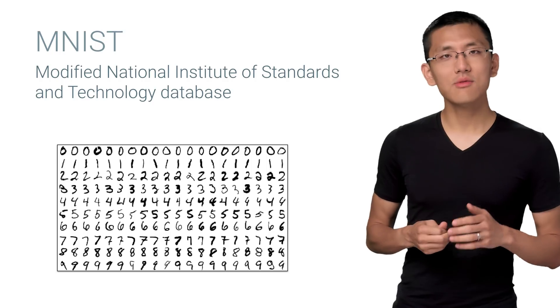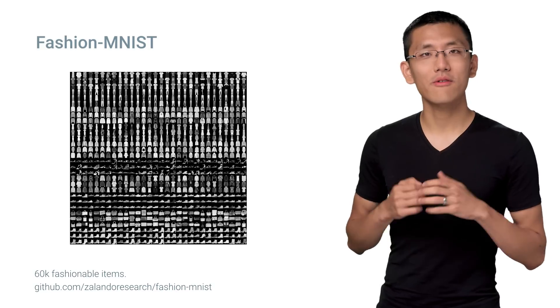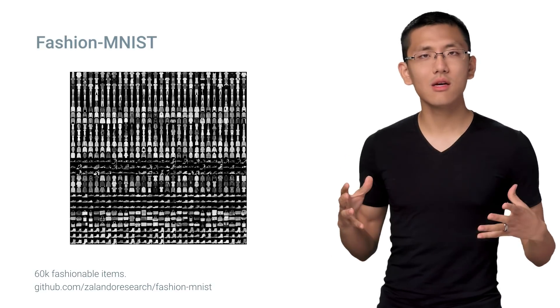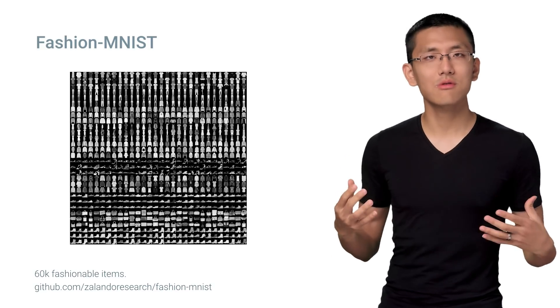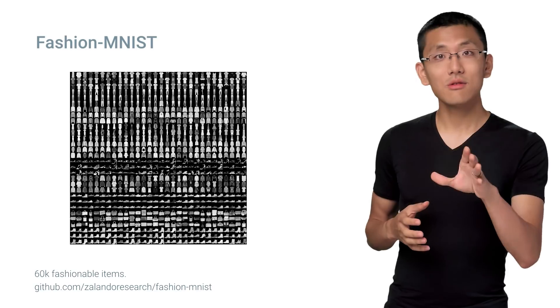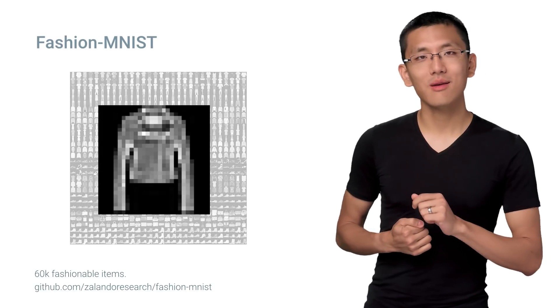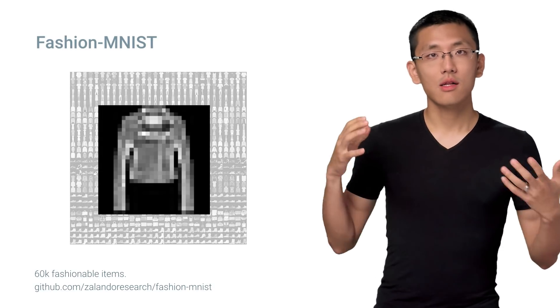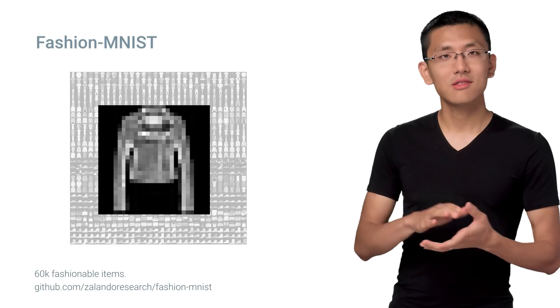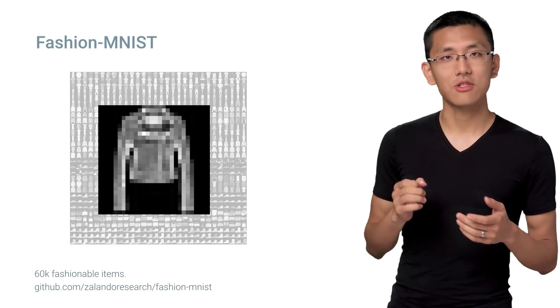Zalando decided it was time to make MNIST fashionable again and recently released a data set called Fashion MNIST. It's the exact same format as the regular MNIST, except the data is in the form of pictures of various clothing types, shoes, and bags. It's still across 10 categories, and the images are still 28 by 28 pixels. So let's train a model to detect which type of clothing is being shown.